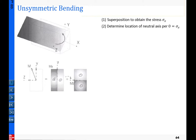We're going to look for answers to two questions. The first is how to obtain the stress at any point over the cross-section of the beam under unsymmetric bending. The second is to determine the orientation of the neutral axis. In pure bending, the neutral axis passes through the centroid and aligns in the z or y direction. But due to unsymmetric bending, the orientation of the neutral axis will be tilted.